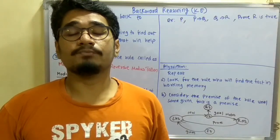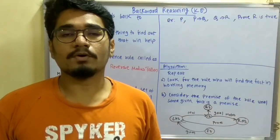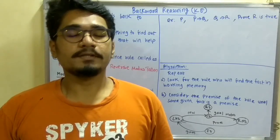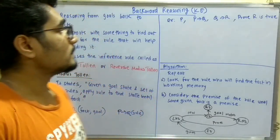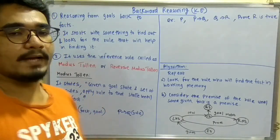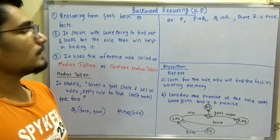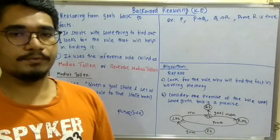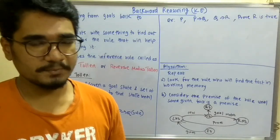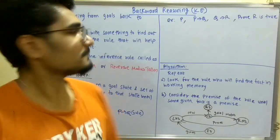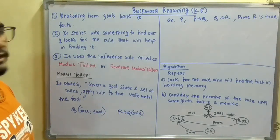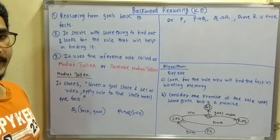In my previous video I discussed forward chaining or forward reasoning in knowledge extraction in AI. In this video I'll be discussing the second type of reasoning, which is backward reasoning or backward chaining. This is Ranjiraj and you are streaming on Study Piece Low's Gates.